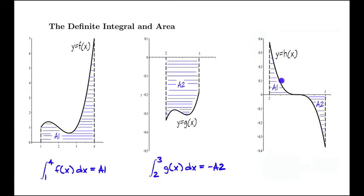So if you have a function like this one where you have a part of it above and a part of it below, then if you want the definite integral from 2 to 3 of a function like this, of a function h of x that looks like this, then what you're going to get back is the positive area above minus the negative area below. So you're going to get back A1 minus A2 in this case.